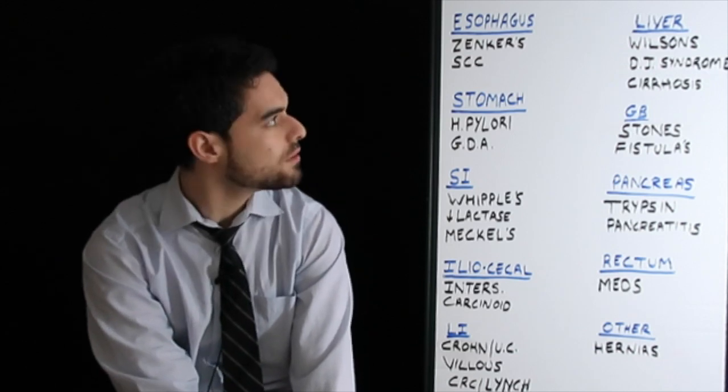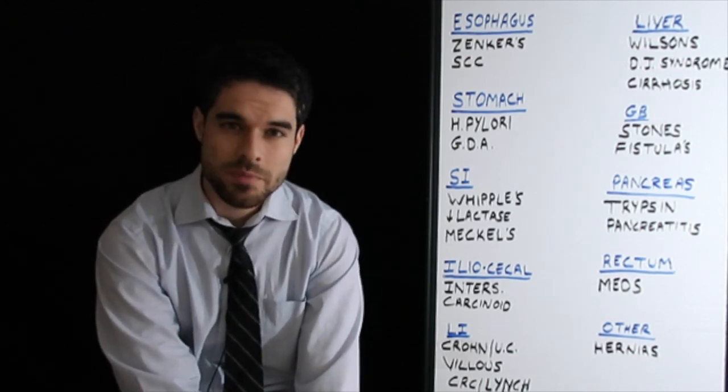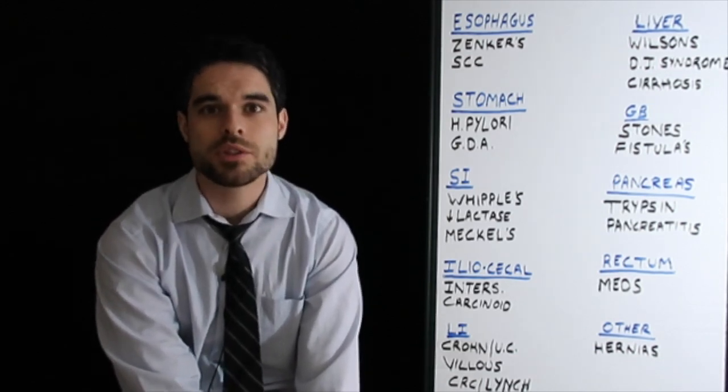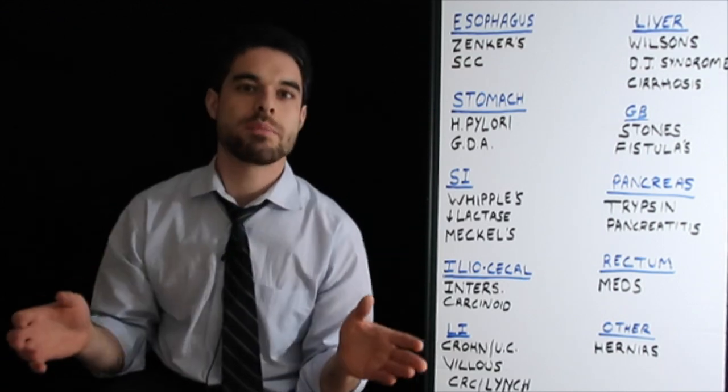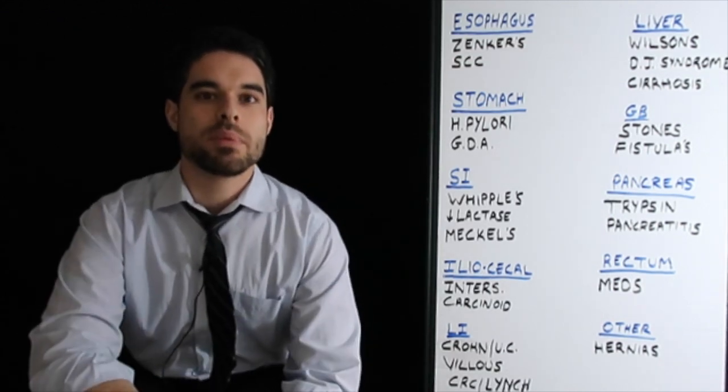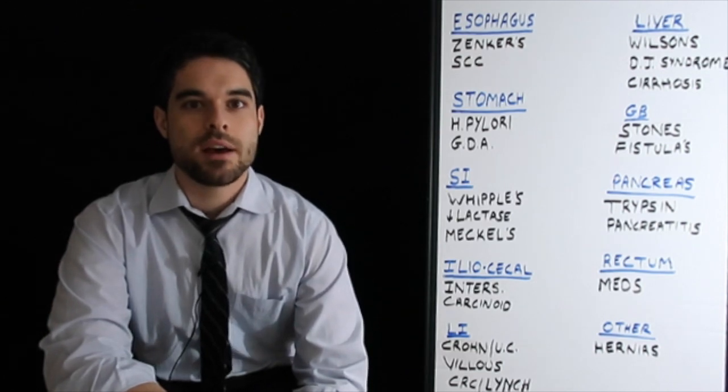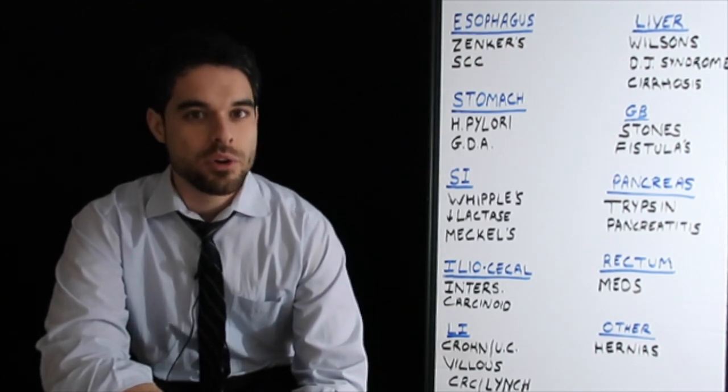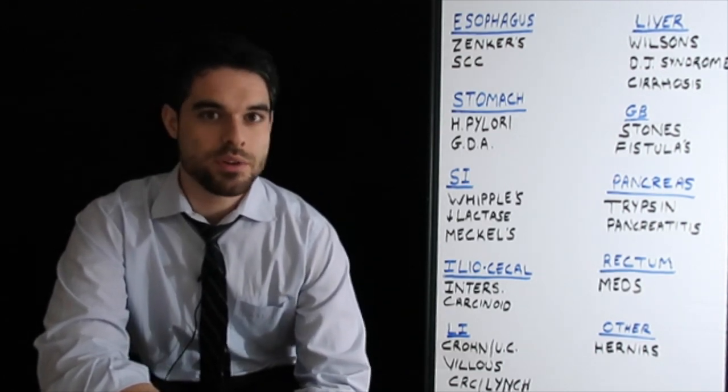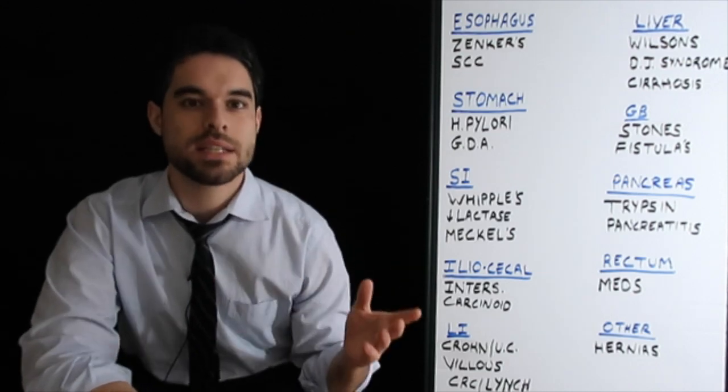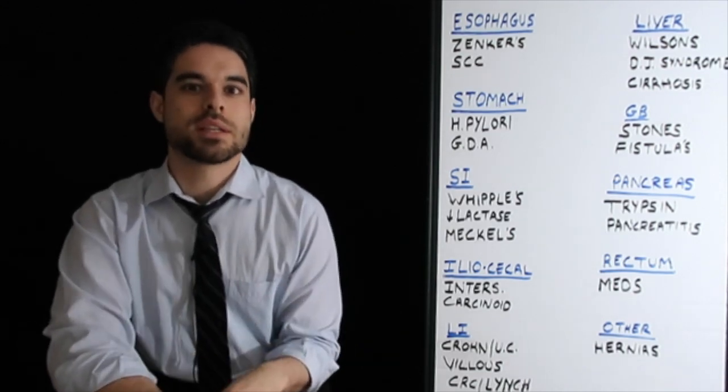You can also have Dubin-Johnson syndrome when you can't excrete bile. So you're able to conjugate it. Everything works great, but you just can't excrete it. And so you have the buildup of the conjugated bilirubin. And a note here is that this can present in adulthood. So you may have a patient who's 18, 19, comes to the office with Dubin-Johnson syndrome.